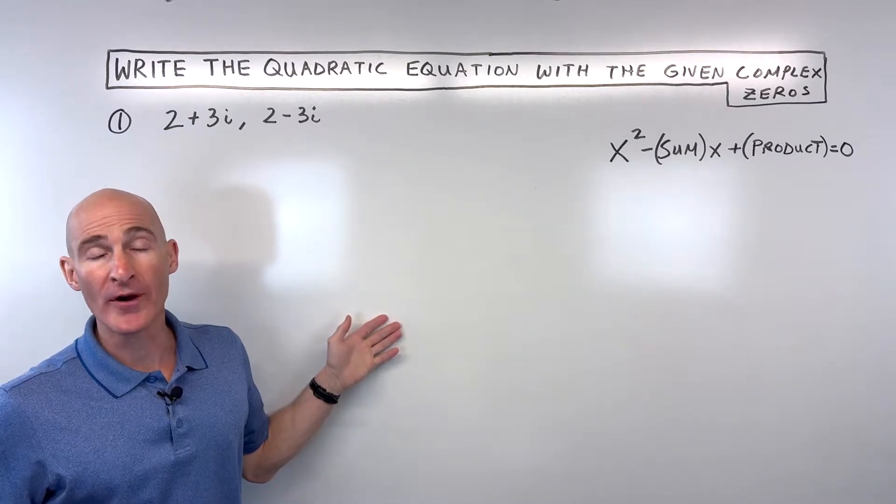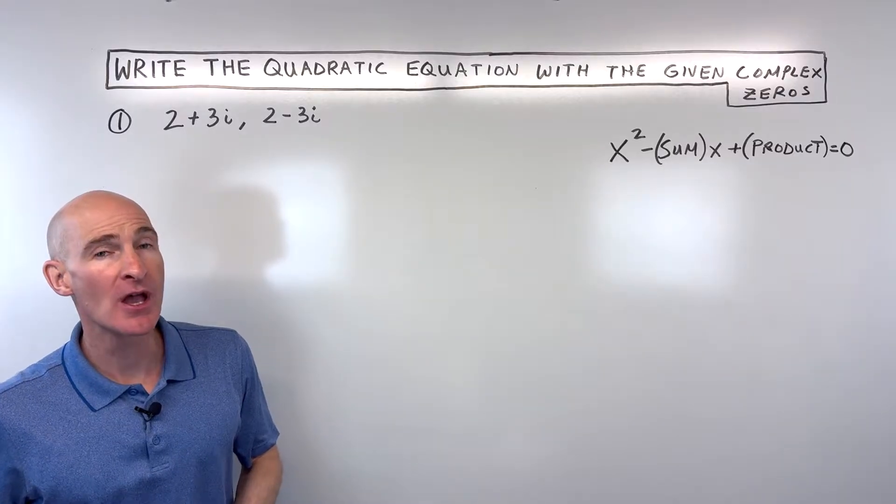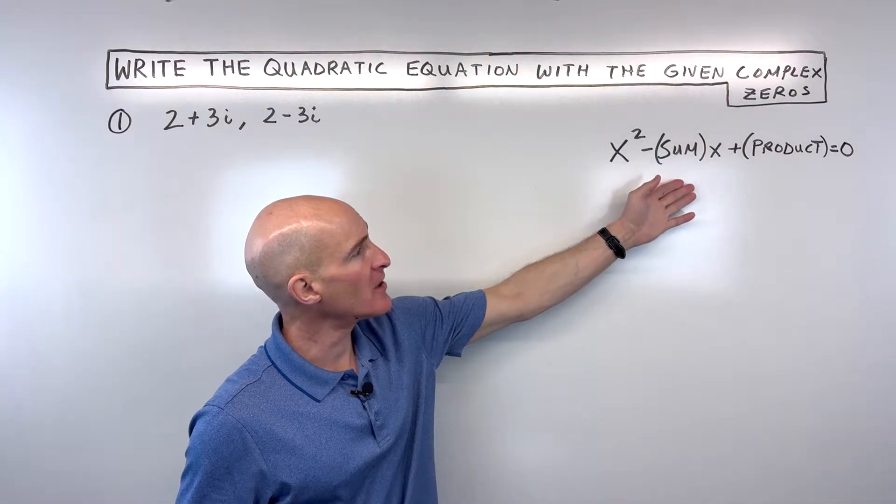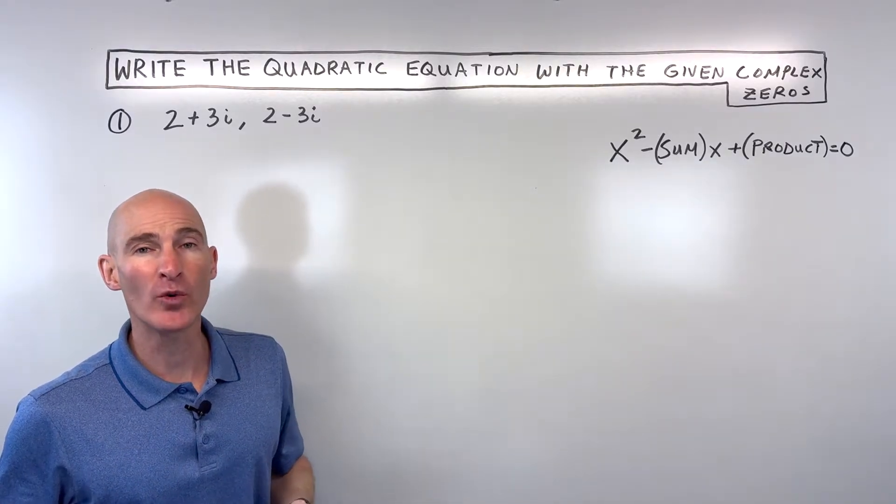In this video you're going to learn how to write the quadratic equation when you're given two complex zeros. We're going to be using this formula right here and we're going to go through an example together and at the end of the video I'm going to show you why this formula works.